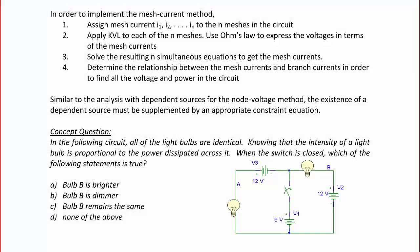Concept Question 1. In the following circuit, all of the light bulbs are identical. Knowing that the intensity of a light bulb is proportional to the power dissipated across it, when the switch is closed, which of the following statements is true? The first thing we can do with this circuit is model the light bulbs as resistors. Since they all have equal value, we can label all the resistors R.